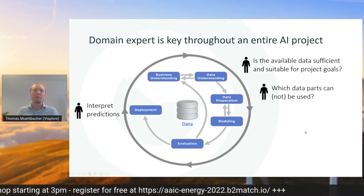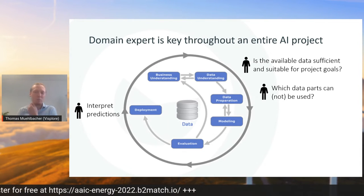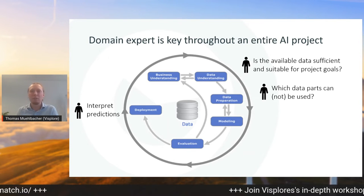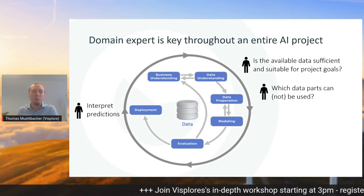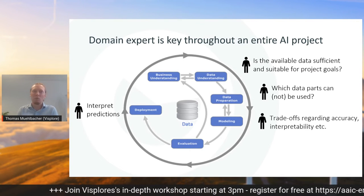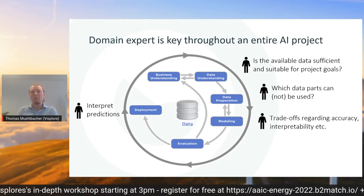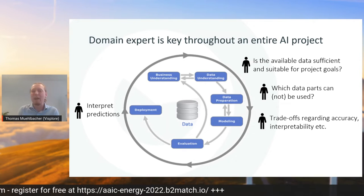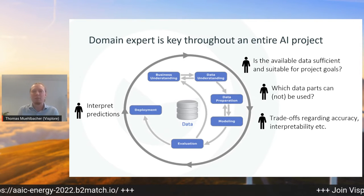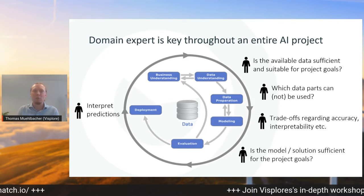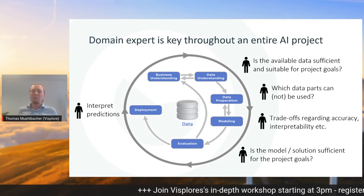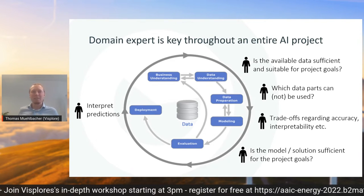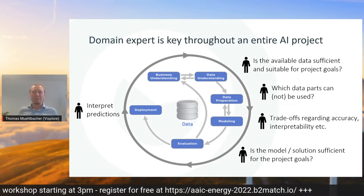Data understanding and preparation are very time-consuming parts of a project, and only humans can assess which parts of the data can actually be used — maybe some parts are not relevant anymore, and an AI wouldn't know this. During modeling, only humans know the application context and can make the right trade-offs between maximum accuracy or a simpler model that can be interpreted. During evaluation, humans need to assess if the solution is already good enough. For all of these things, humans need to be in the loop and are actually key for the success of the project.